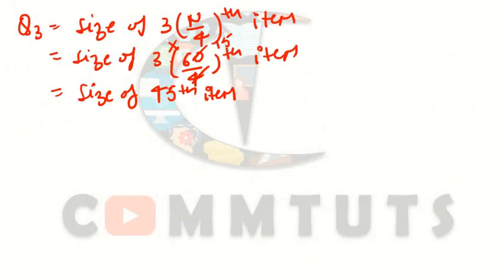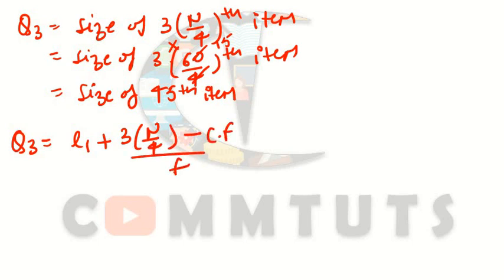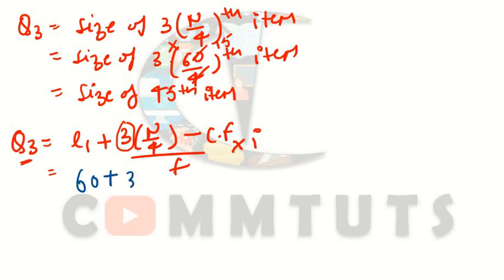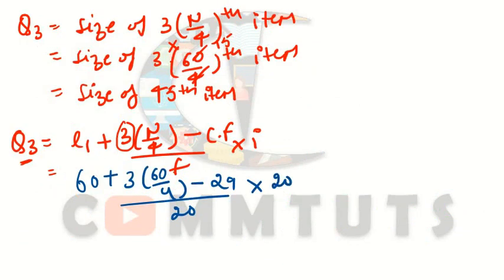Now we calculate Q3 using the formula: Q3 = L1 + [(3N/4 − Cf) / f] × i. Here, L1 = 60, N = 60, cumulative frequency (Cf) of the preceding class = 29, frequency (f) = 20, and class interval (i) = 20. So Q3 = 60 + [(3×60/4 − 29) / 20] × 20.